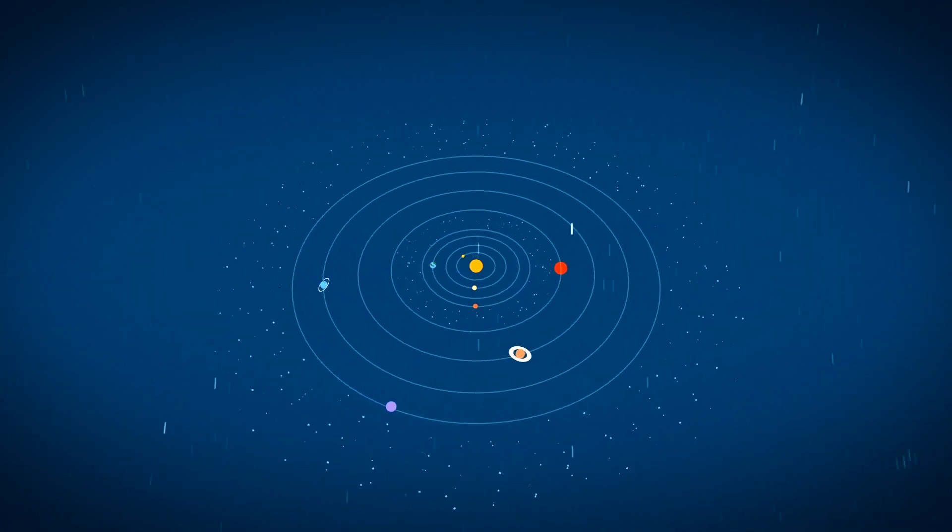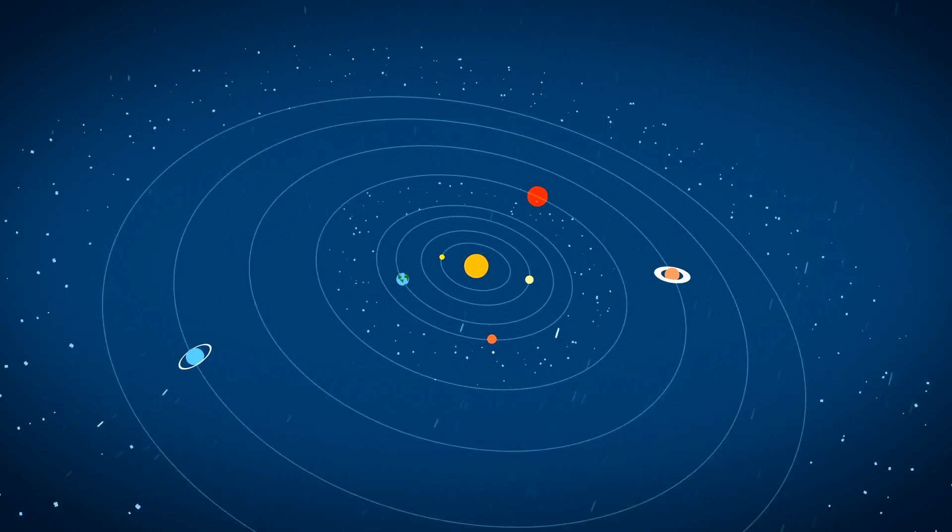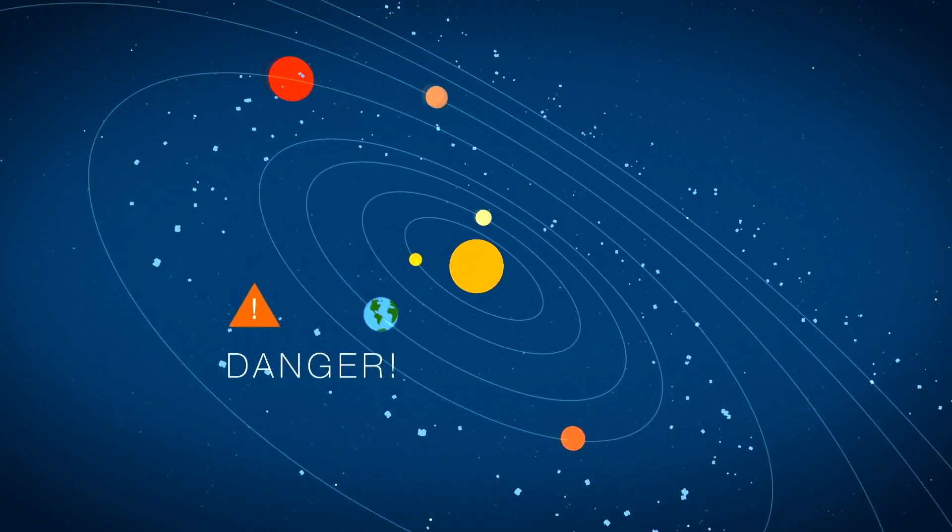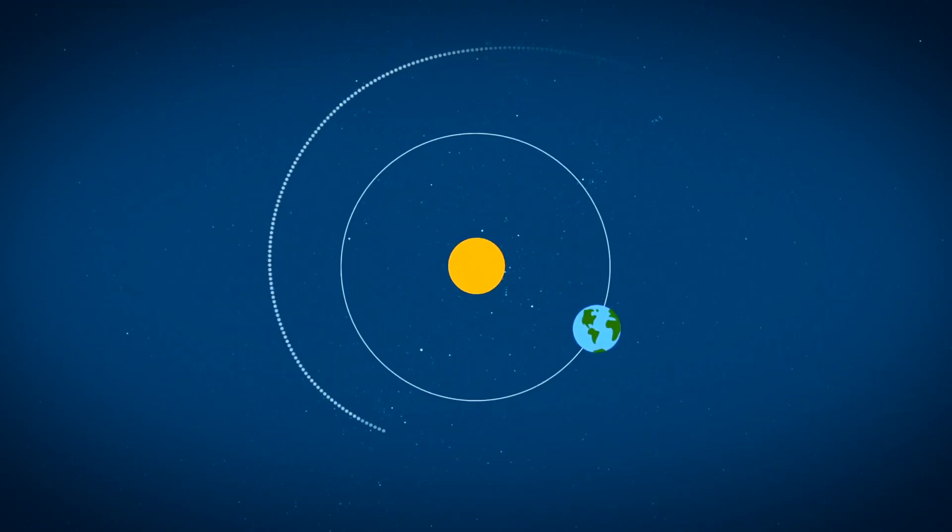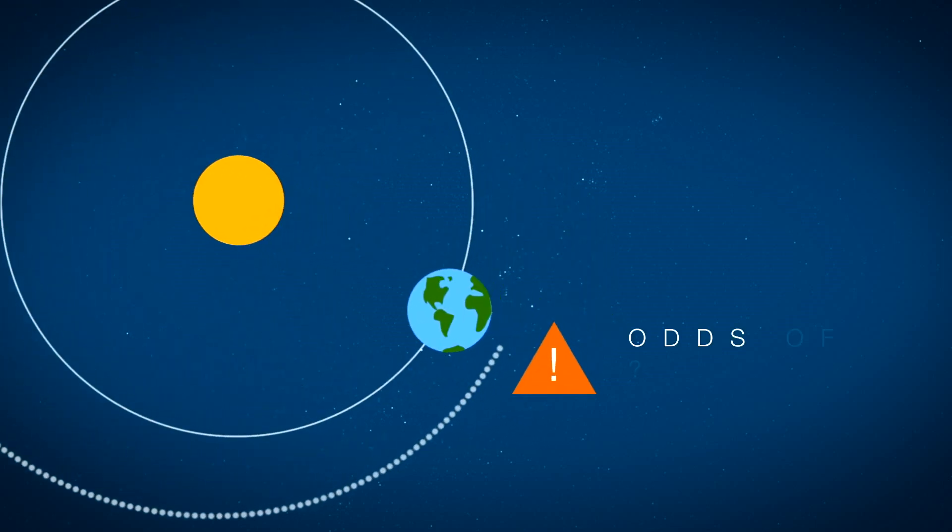Most other asteroids tend to stay grouped together in a few regions of our solar system, yet some still end up in our backyard. So once these asteroids get close, what makes the difference between a near-miss and a potential hit?